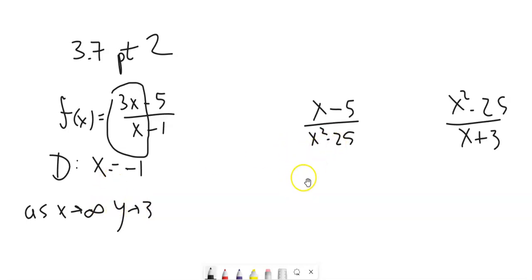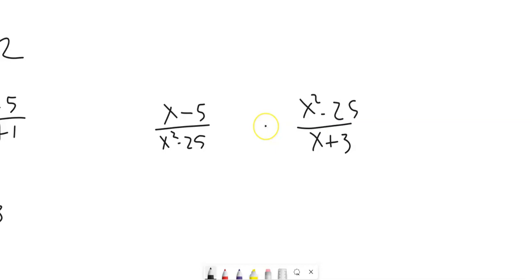We've also talked about how sometimes we'll get holes, right? Like if I had this X minus five over X plus five times X minus five, that divides out. So it's basically the same as this graph, but with a hole at positive five. So X can't be positive five.